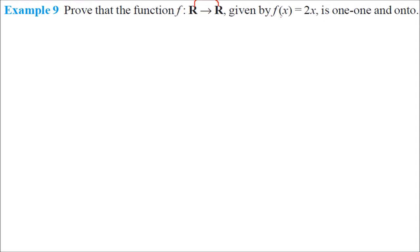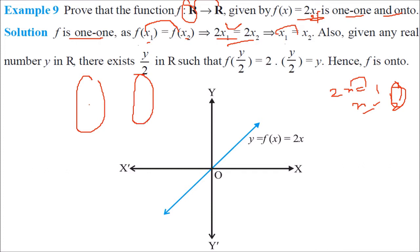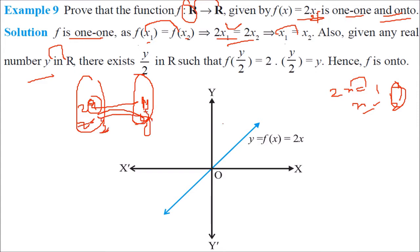Prove that f: R → R given by f(x) = 2x is one-to-one and onto. One-to-one: f(x1) = f(x2) implies 2x1 = 2x2, so x1 = x2. Onto: take any y ∈ R; then x = y/2 belongs to R and f(y/2) = 2·(y/2) = y. So for every real y, there exists a real x. If you draw 2x on the xy-axis, the line covers the entire real line — confirming it is onto.